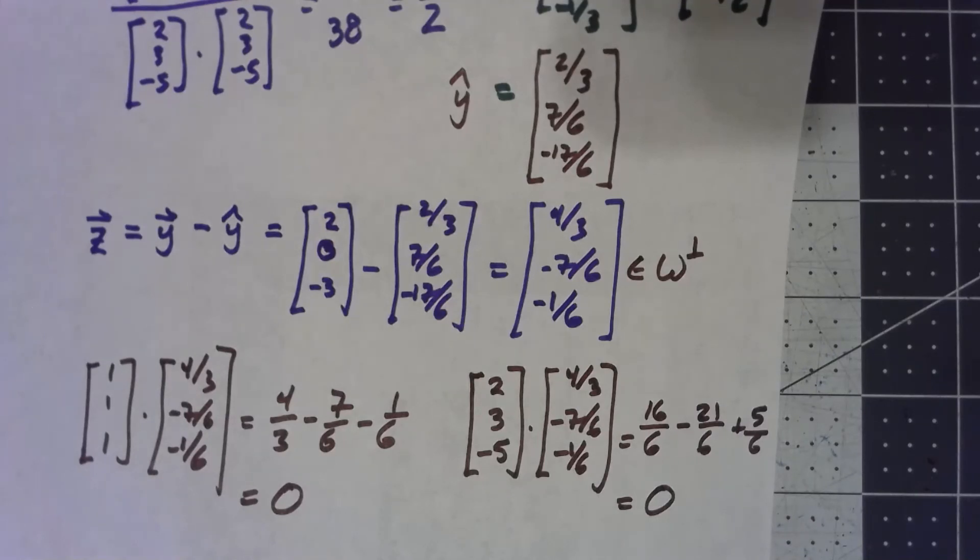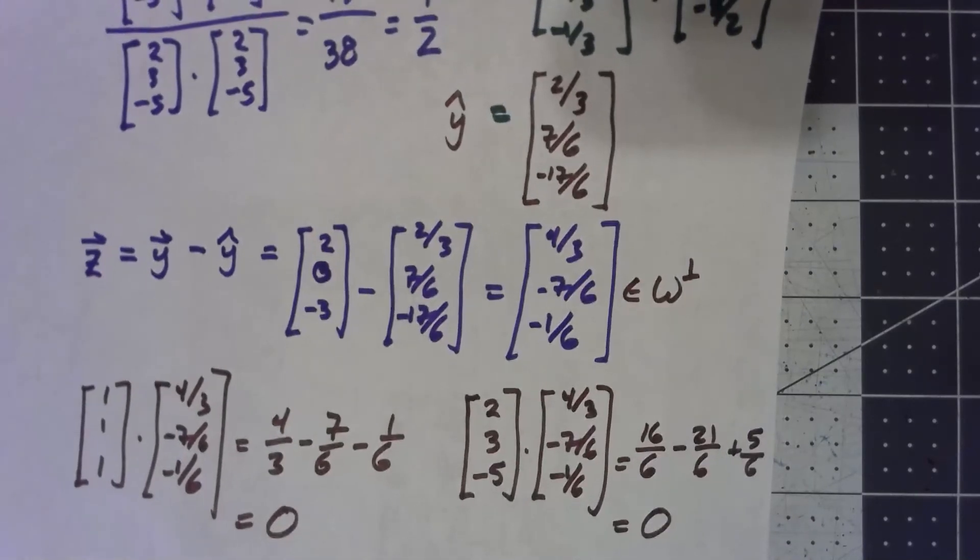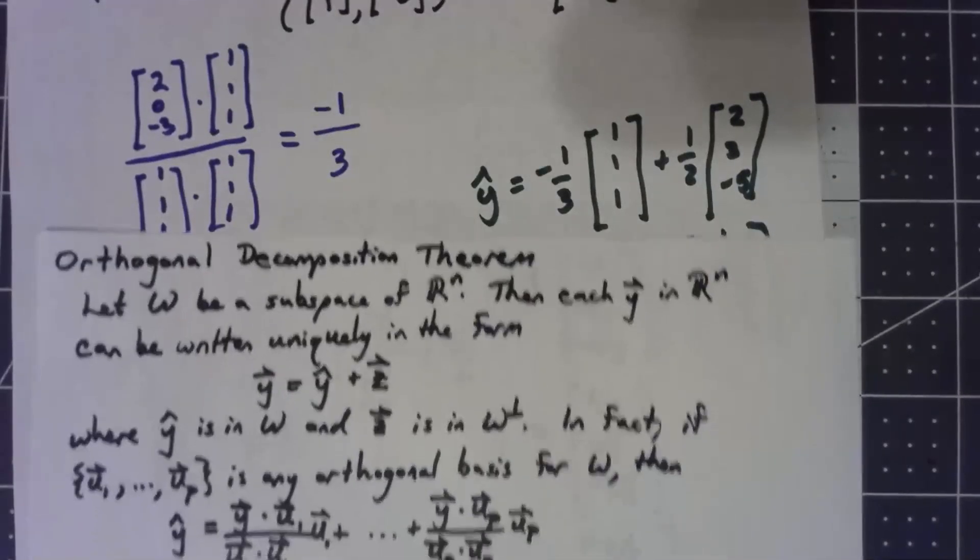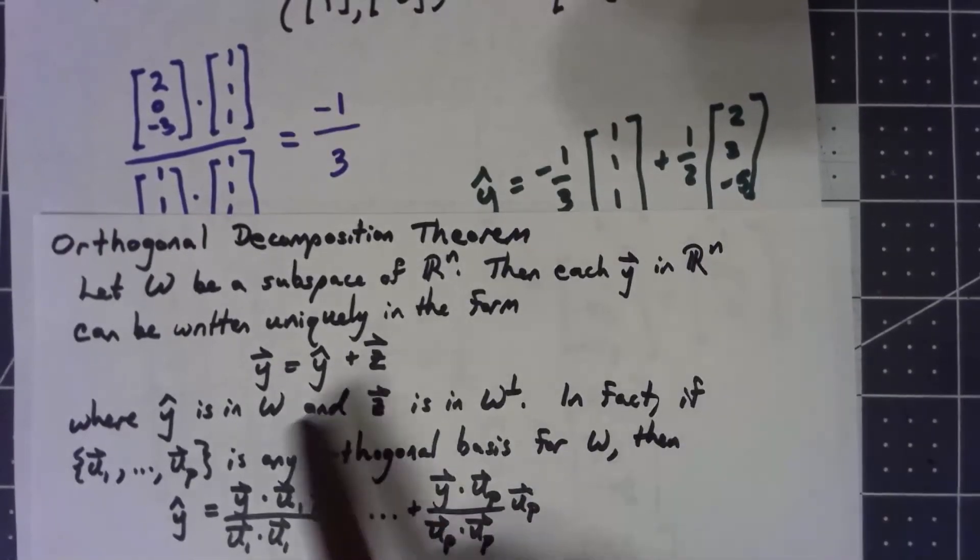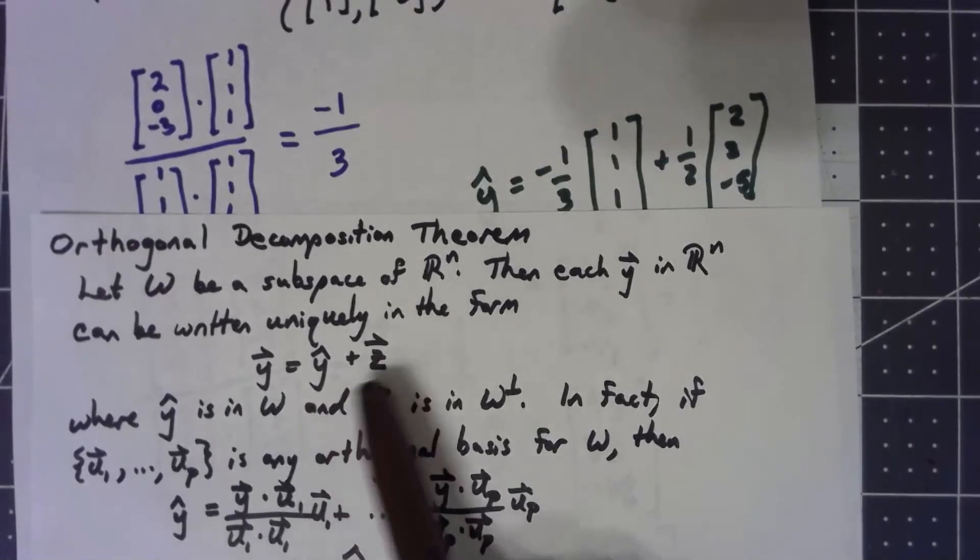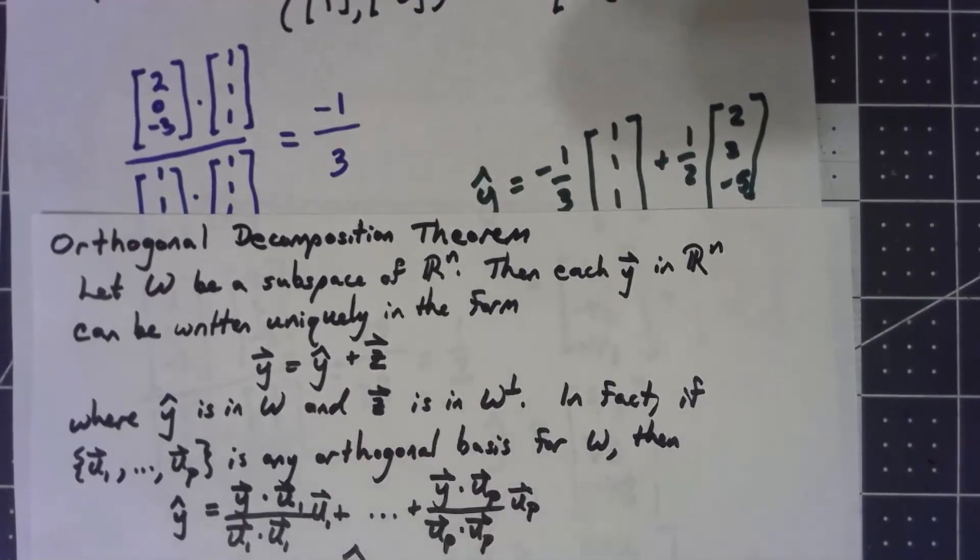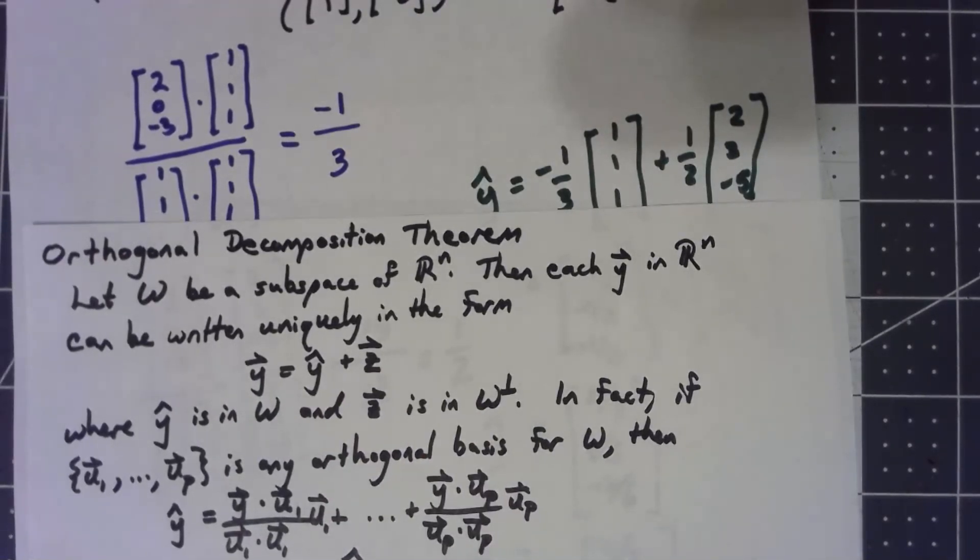So there we go. Just by doing some dot products, some ratios, and a good amount of fraction math, we can decompose that vector. We can take any vector of yⁿ, break it down into a part that's in w, and a part that's in w perpendicular.